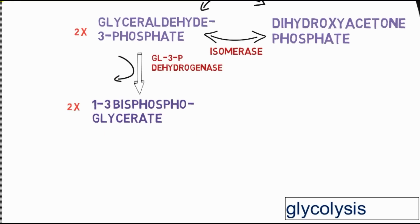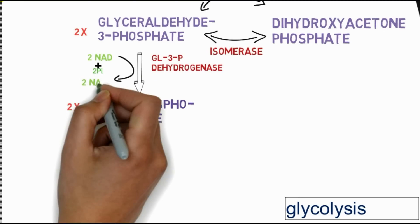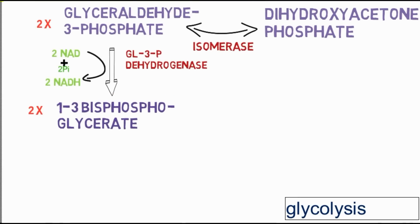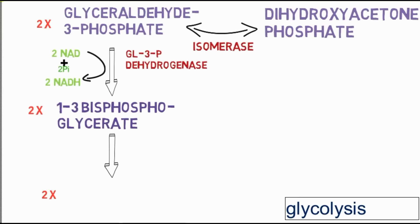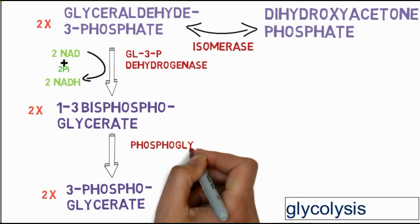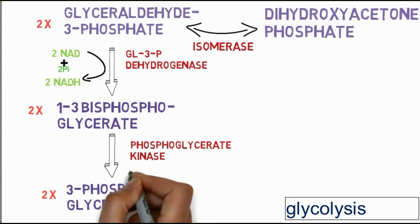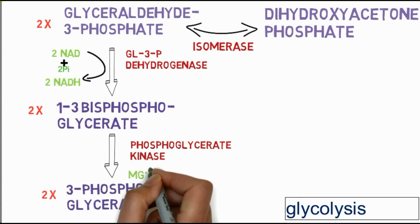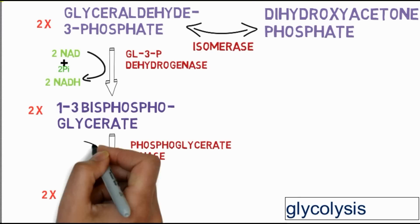In the second phase, glyceraldehyde-3-phosphate is converted into 1,3-bisphosphoglycerate by the enzyme glyceraldehyde-3-phosphate dehydrogenase. In this reaction, two molecules of NAD bind with phosphate and give rise to 2 NADH molecules.